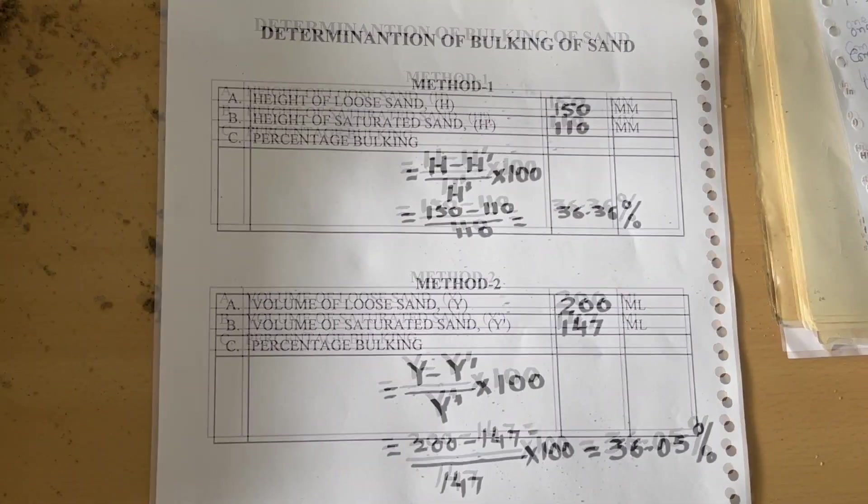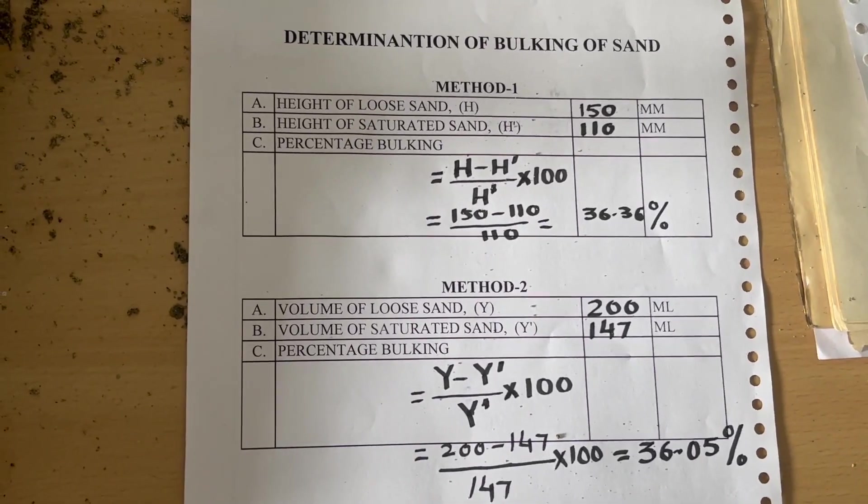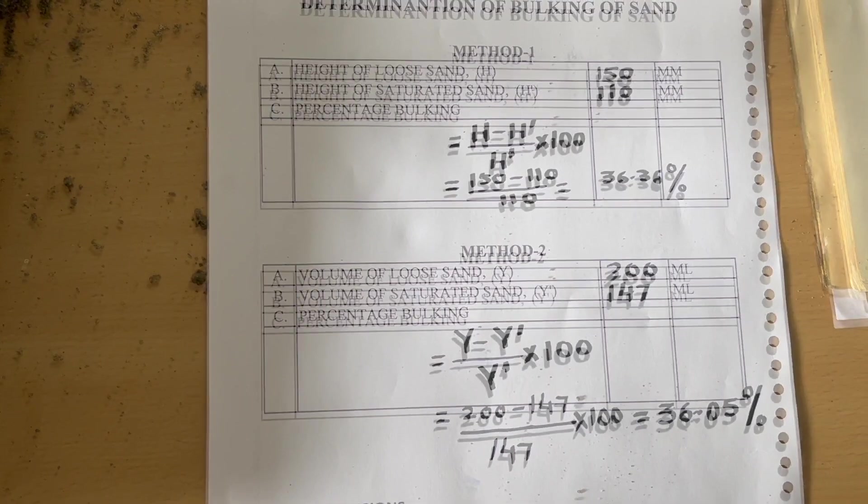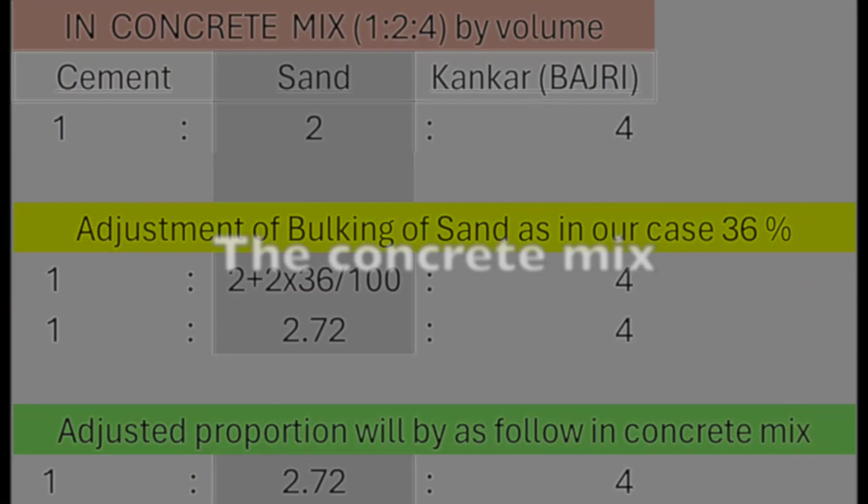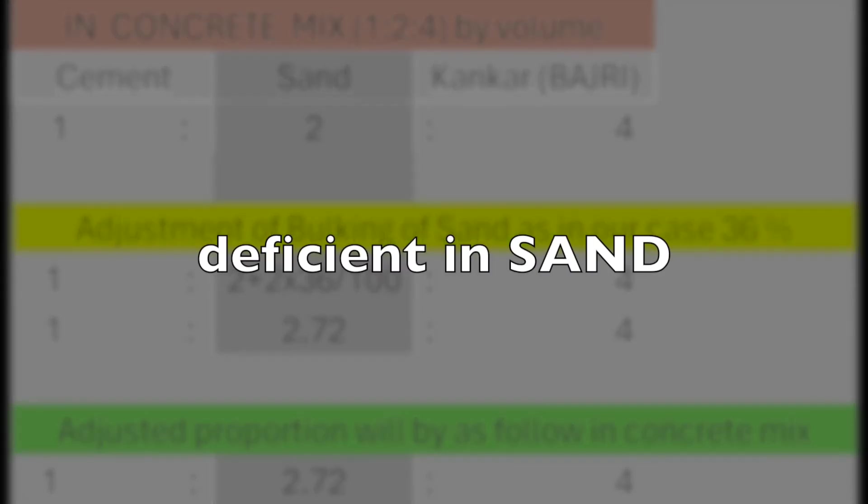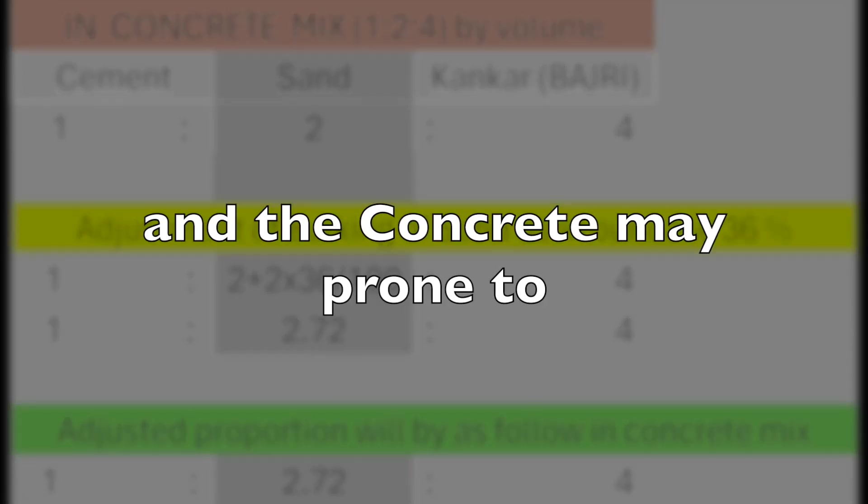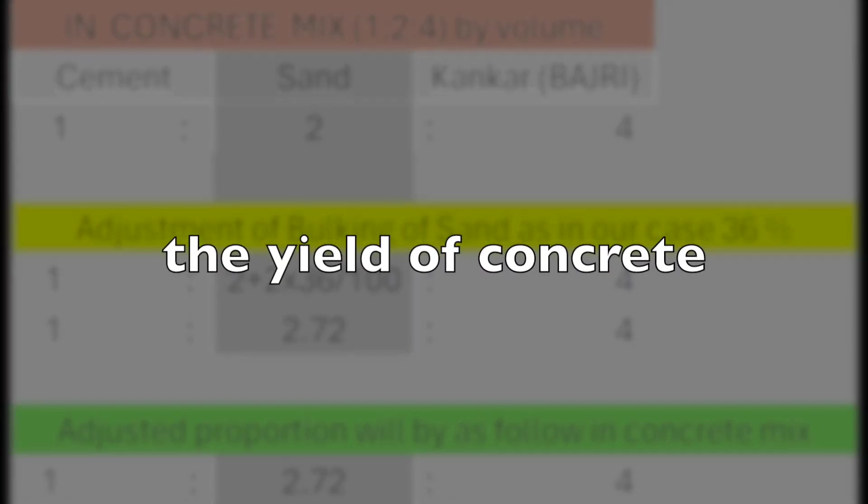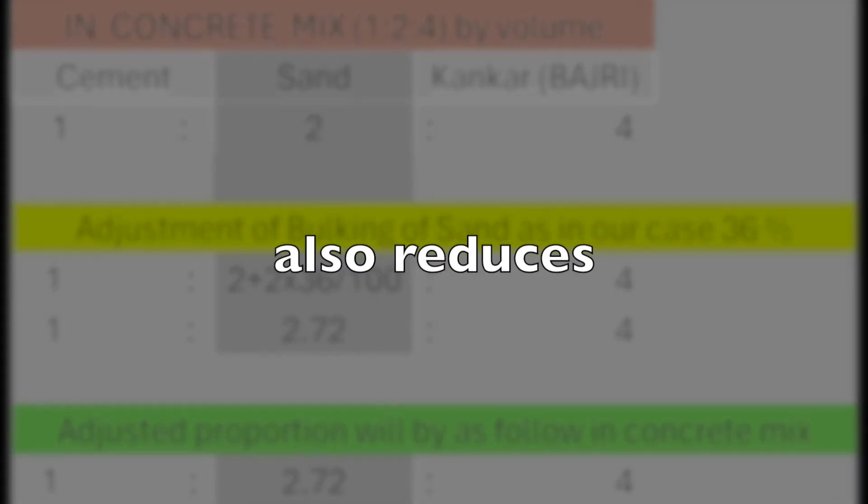During the batching of the volume, bulking results in smaller bed of sand occupying the fixed volume from measuring box. The concrete mix then becomes deficient in sand and the concrete may be prone to segregation. The yield of concrete also reduced.